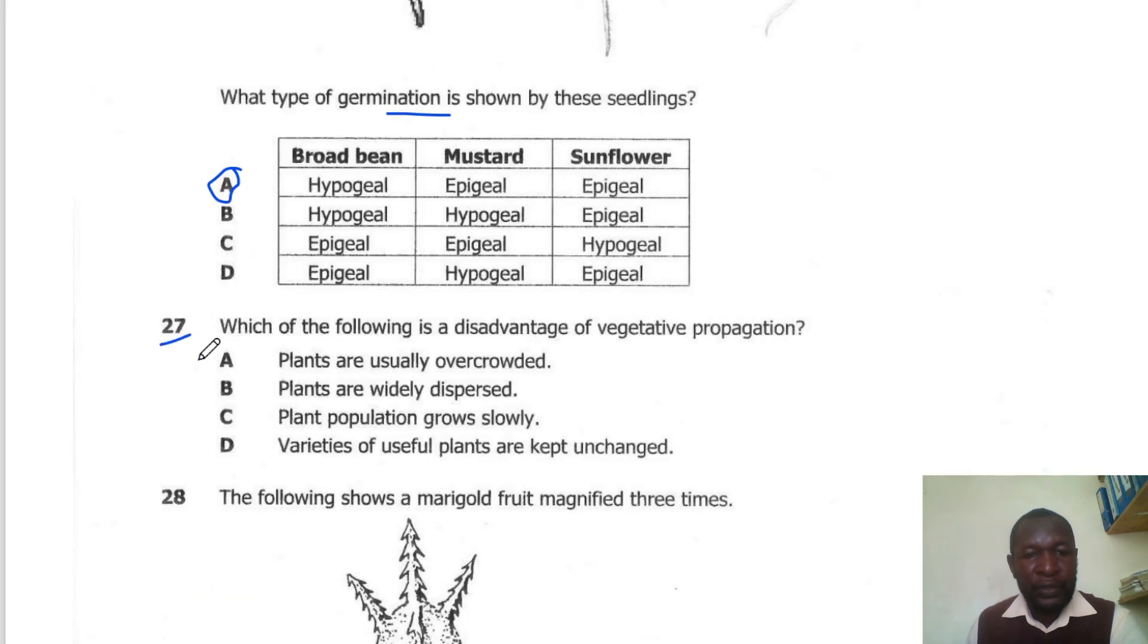Question 27. Which of the following is a disadvantage of vegetative propagation? The disadvantage of vegetative propagation is that plants will be overcrowded. So the correct answer here is A.